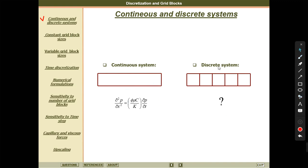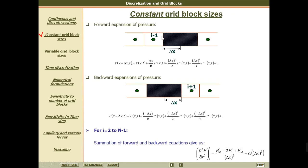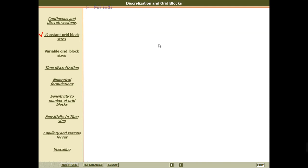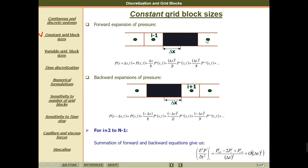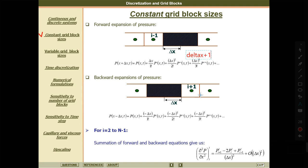First of all, we are considering the grid block sizes. We said that they are equal — all the blocks have the same size. In the previous lecture we also said that if you consider one block as delta x, then one step ahead will be delta x plus 1, or you can say i plus 1.